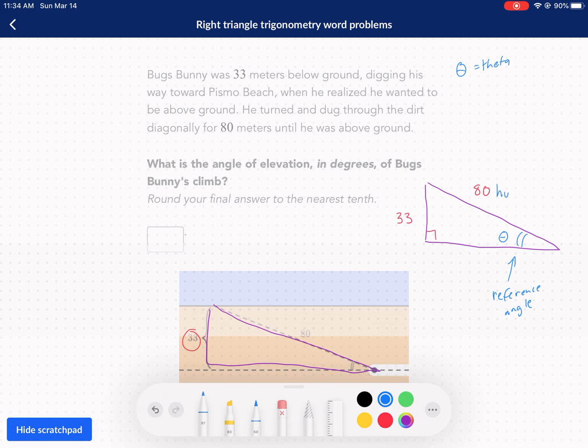Your hypotenuse is always going to be the side opposite 90 degrees, no matter where your reference angle is. But when we're talking about the opposite side, the opposite side is going to be opposite your reference angle. And the adjacent side is going to be this side next to your reference angle.